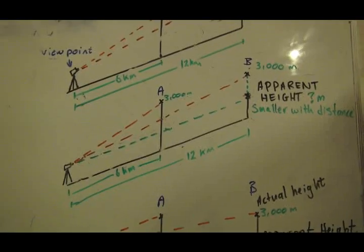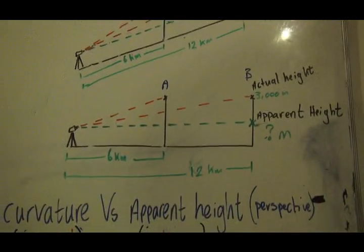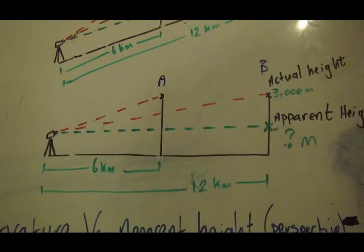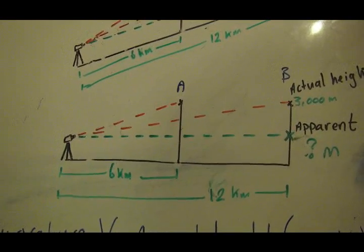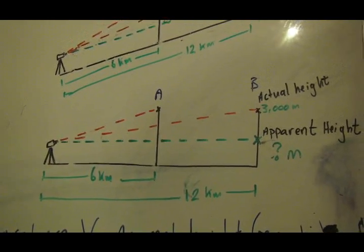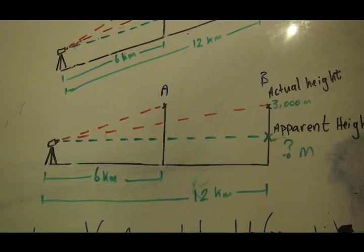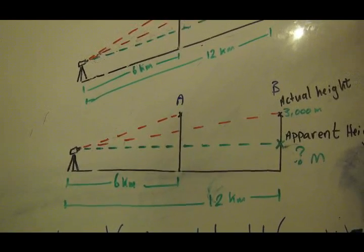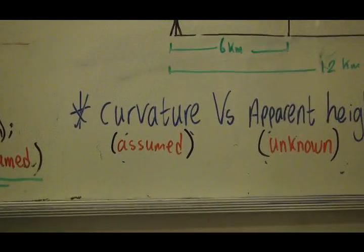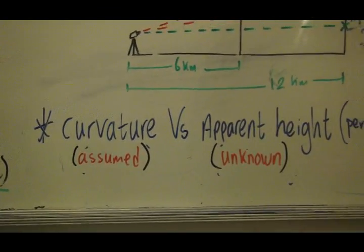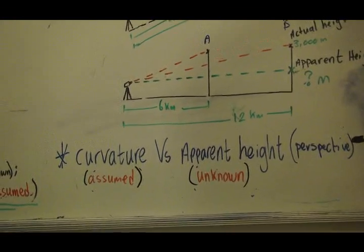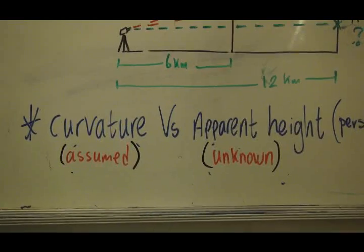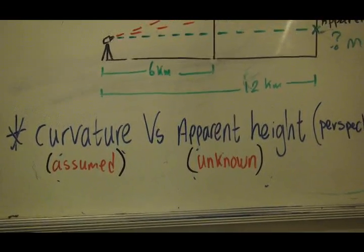He's not going to look at it like this, not taking into account the height difference or the apparent height difference. So we're stuck. We're going to be stuck with results that indicate a curve when the difference in size, because of the distance of that object, creates a completely different angle, a lower angle. Curvature versus apparent height, based on your perspective, they are both—well, curvature is assumed, apparent height is unknown.